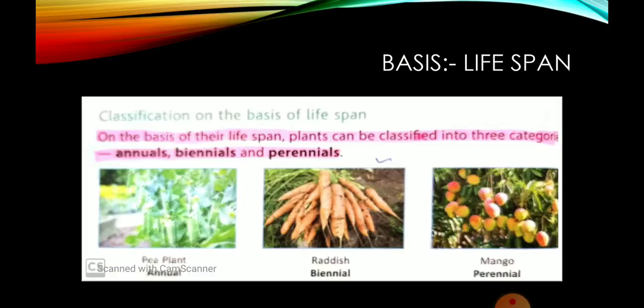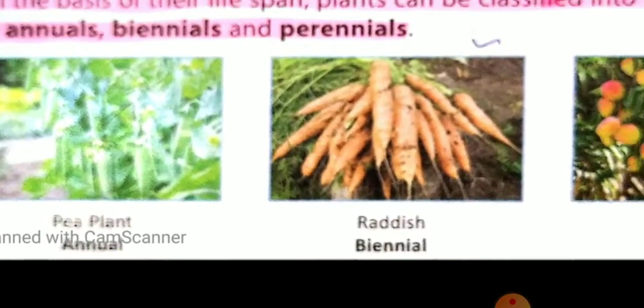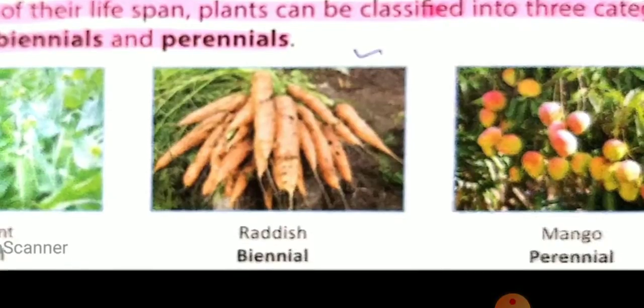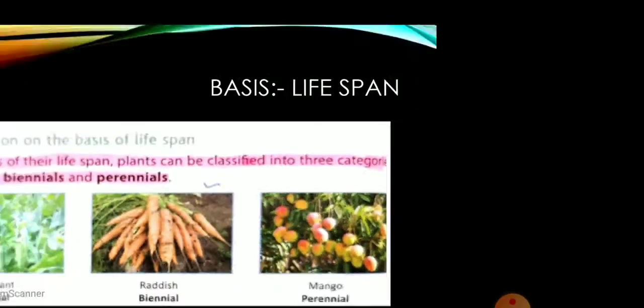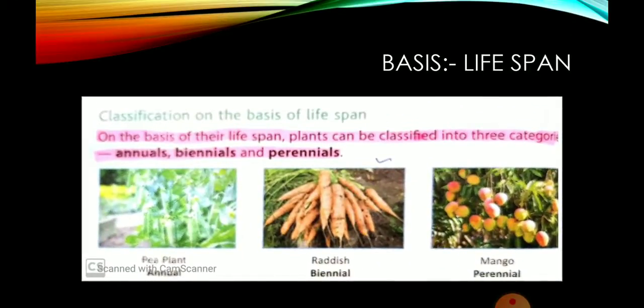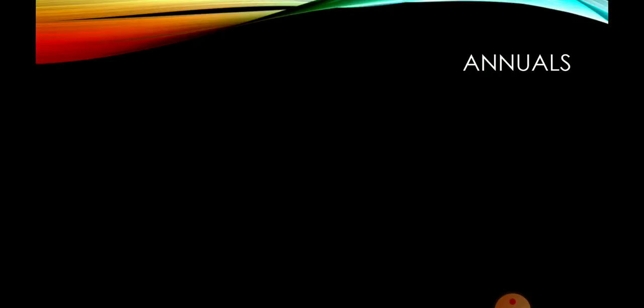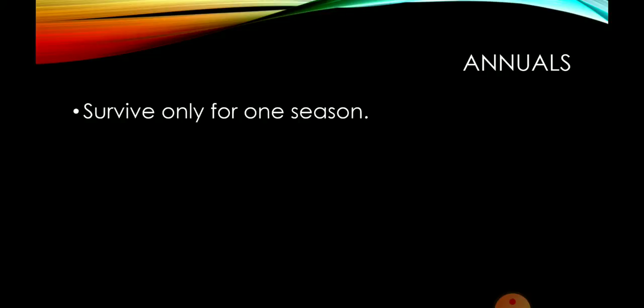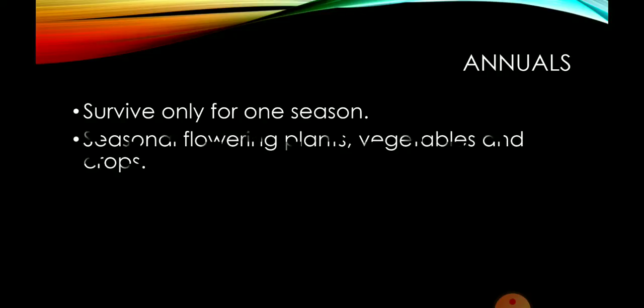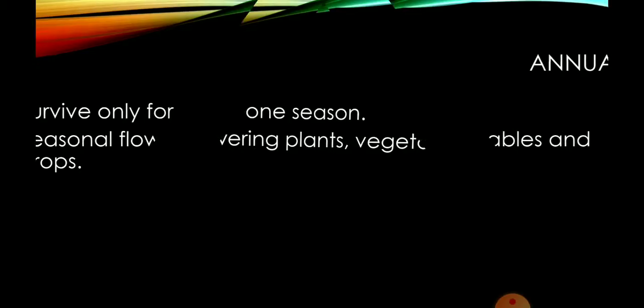Annuals का example है pea plants. Biennial का example है radish. Then mango is perennial. Annuals होते हैं — वो एक साल के लिए जिन्दा रहते हैं, they live only for one season. जो seasonal flowering plants होते हैं जैसे गेंदे का फूल, marigold, vegetables, और crops जैसे wheat — ये सारे annuals होते हैं.